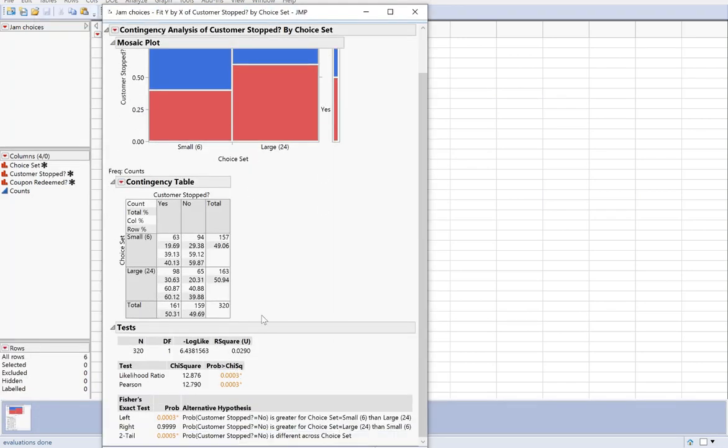So in the output, we have the Pearson chi-square statistic, 12.790, we calculated that earlier. And then also the p-value. Notice how it's labeled the same as for a goodness of fit test, the probability greater than chi-square. So we can get that output there.